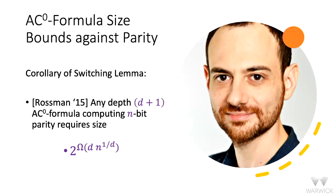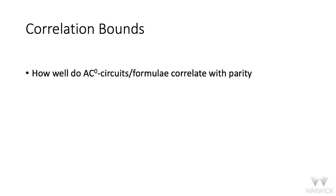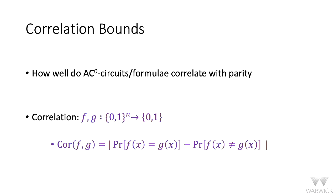That's the picture for exact computation of parity by AC0 formulae and circuits. Going further: suppose we are not interested in computing parity exactly, but want to compute it approximately. How well do AC0 circuits and AC0 formulae correlate with parity? The correlation of two Boolean functions f and g is the absolute difference between the probability f agrees with g and the probability it does not.